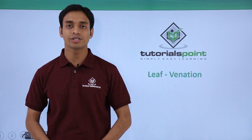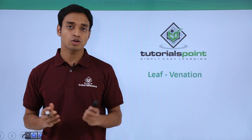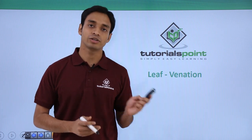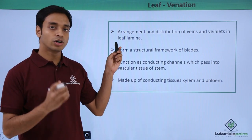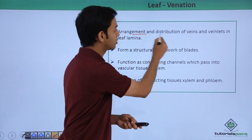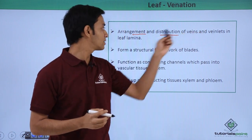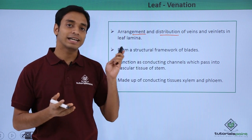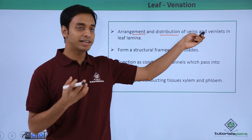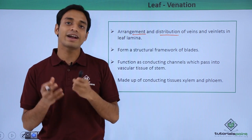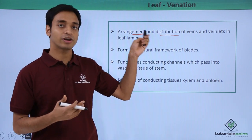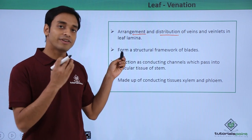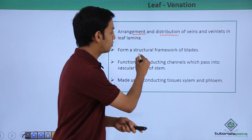Hello everyone, welcome to Tutorials Point. In this video we are going to talk about the topic of leaf venation. Venation refers to the arrangement and distribution of veins and veinlets in the leaf lamina — the flattened green portion of the leaf, also called the blade. The veins and veinlets are arranged in some pattern or random pattern, and that organization or arrangement is known as leaf venation. These veins and veinlets form a structural framework of the leaf blades.